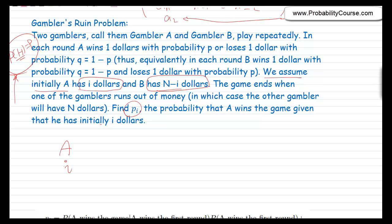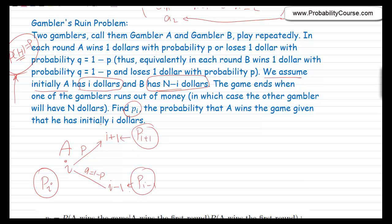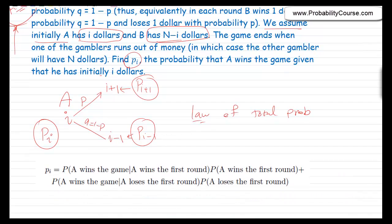We assume A has i dollars at the beginning. After the first round, either A wins the first round — which happens with probability P, after which A will have i + 1 dollars — or A loses the first round with probability Q = 1 − P, in which case A ends up with i − 1 dollars. We are looking for P(i), the probability that A wins. We can relate P(i) to P(i+1) or P(i−1) using the law of total probability, conditioning on the first round.